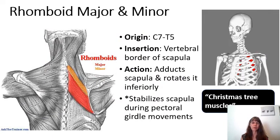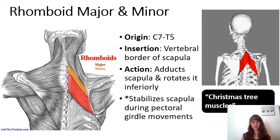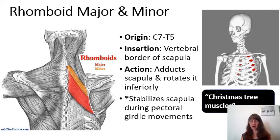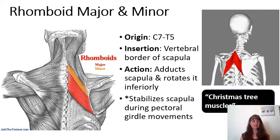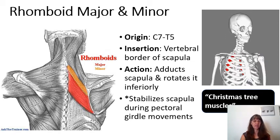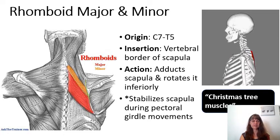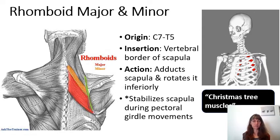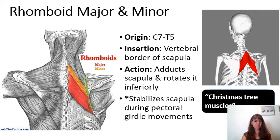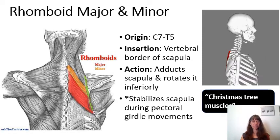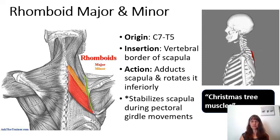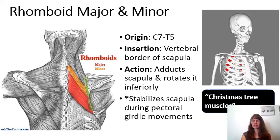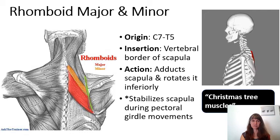Next are rhomboid major and minor. This obeys the rule of the minor muscle being superior and smaller, and the major muscle being inferior and larger. They originate on the spinous processes of C7 through T5 and insert on the medial or vertebral border of the scapula. These muscles adduct the scapulae and rotate them inferiorly, and also help stabilize the scapula during motion involving the pectoral girdle. They are sometimes referred to as the Christmas tree muscle.